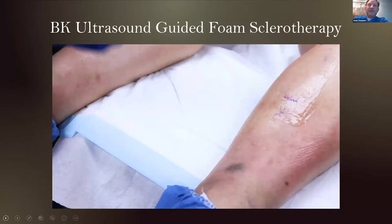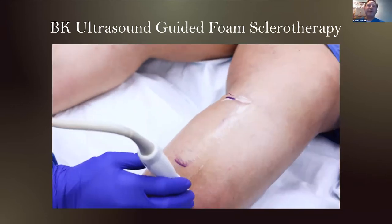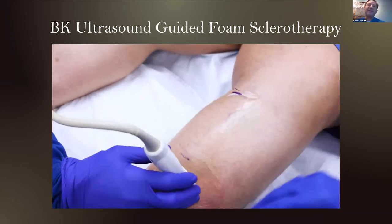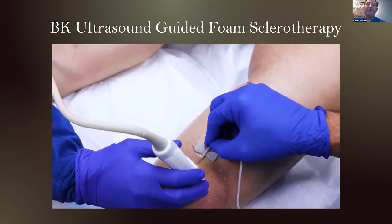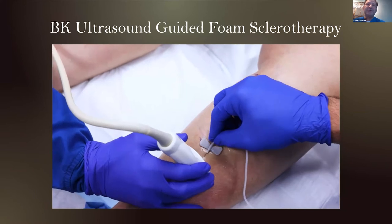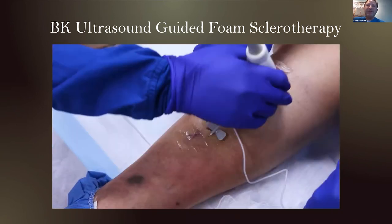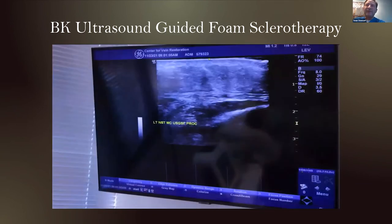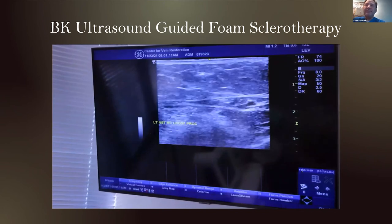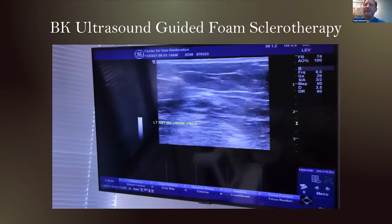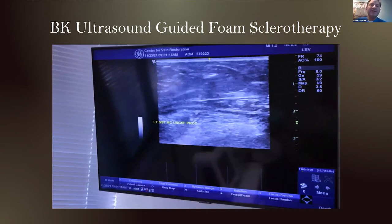Here's a video of ultrasound-guided foam sclerotherapy. Perforators are marked, 0.5% polydocanol is mixed with CO2, and injected using a 27-gauge butterfly to treat the posterior leg tributaries causing cramping and focal achiness in this patient. We apply digital pressure on the perforators to prevent foam from entering the deep system and allow the foam to navigate up the leg. You can follow it with ultrasound — as soon as you see it going into any deeper structures, stop injecting.